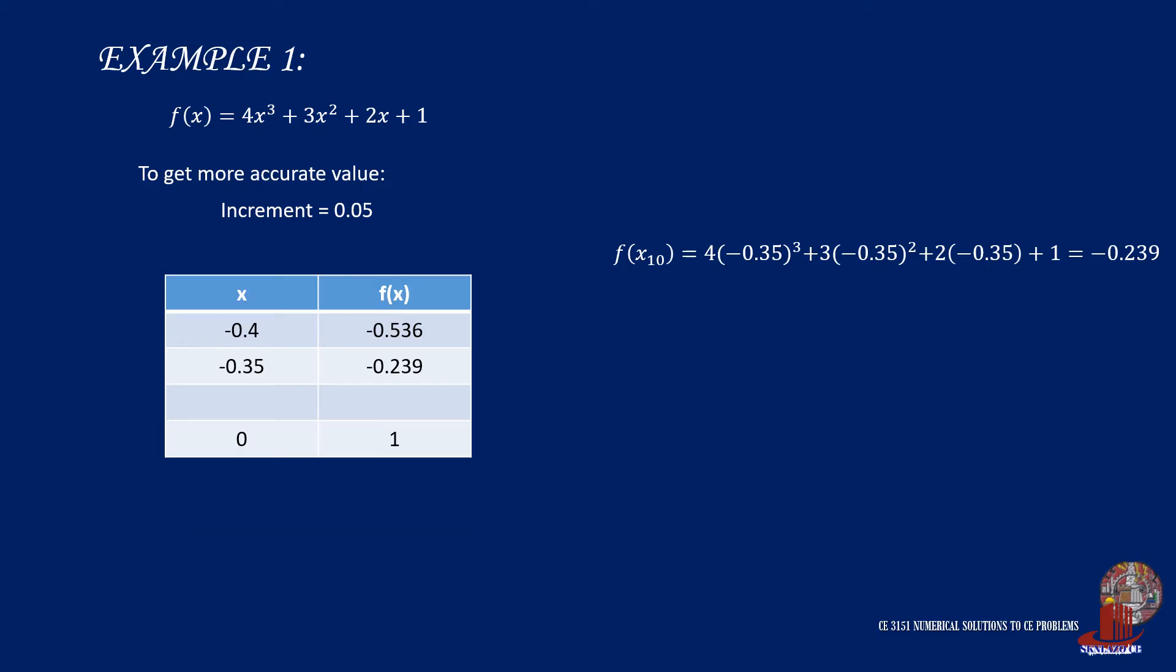Take another increment which would give the value of x as -0.30. In this computation, we get 0.022, a positive number. We can take the root as -0.30 as f(x) is close to 0. But you can still continue working between -0.35 and -0.30 to be more accurate.